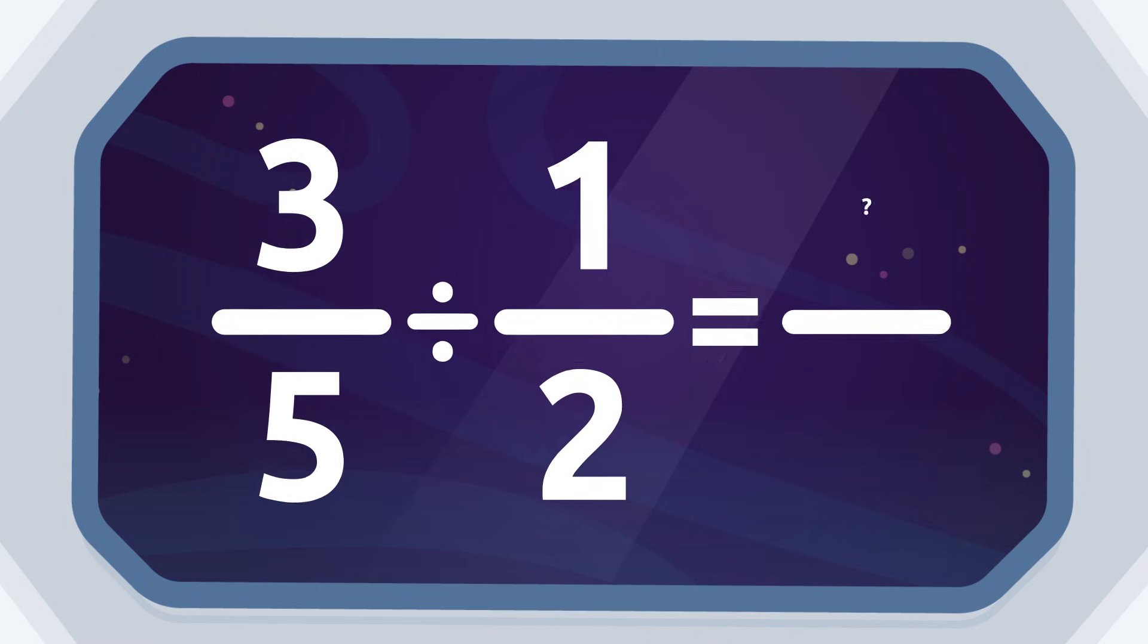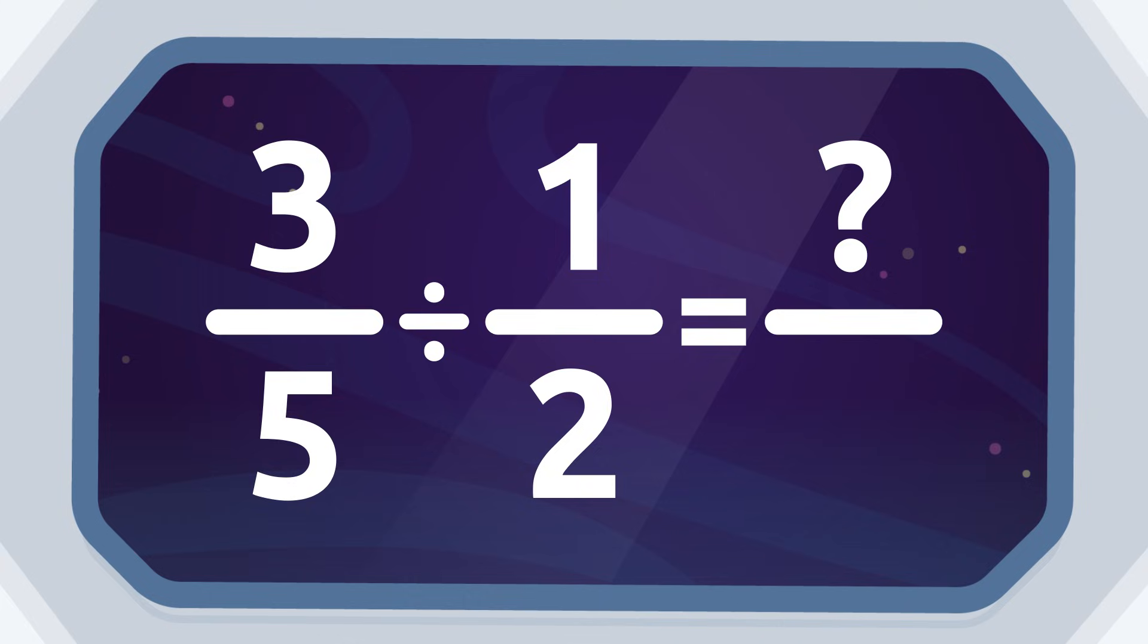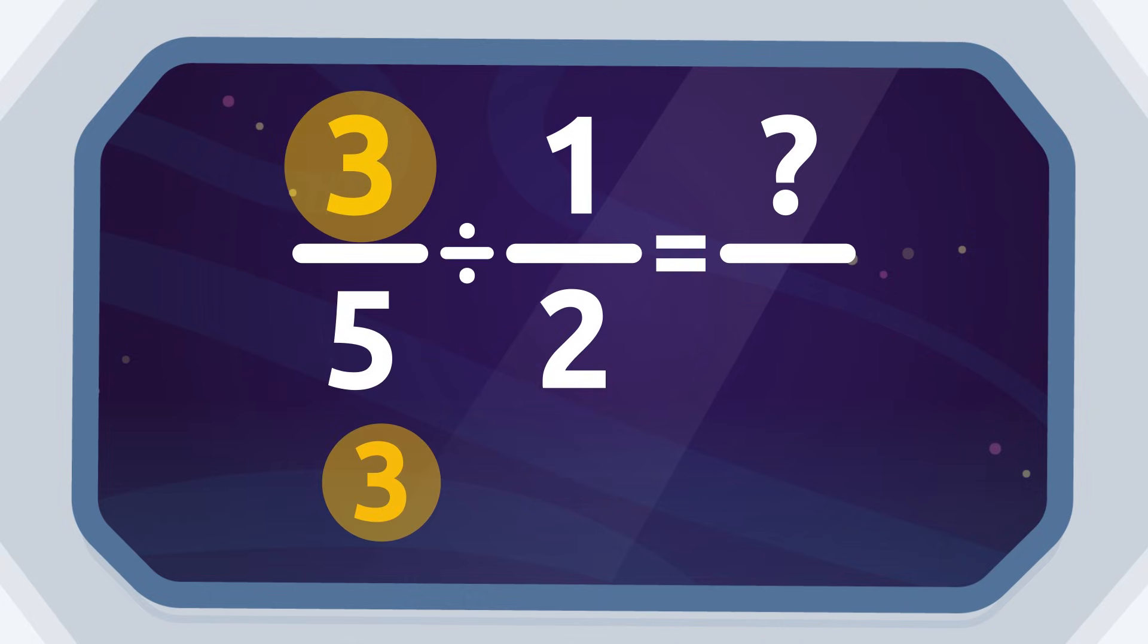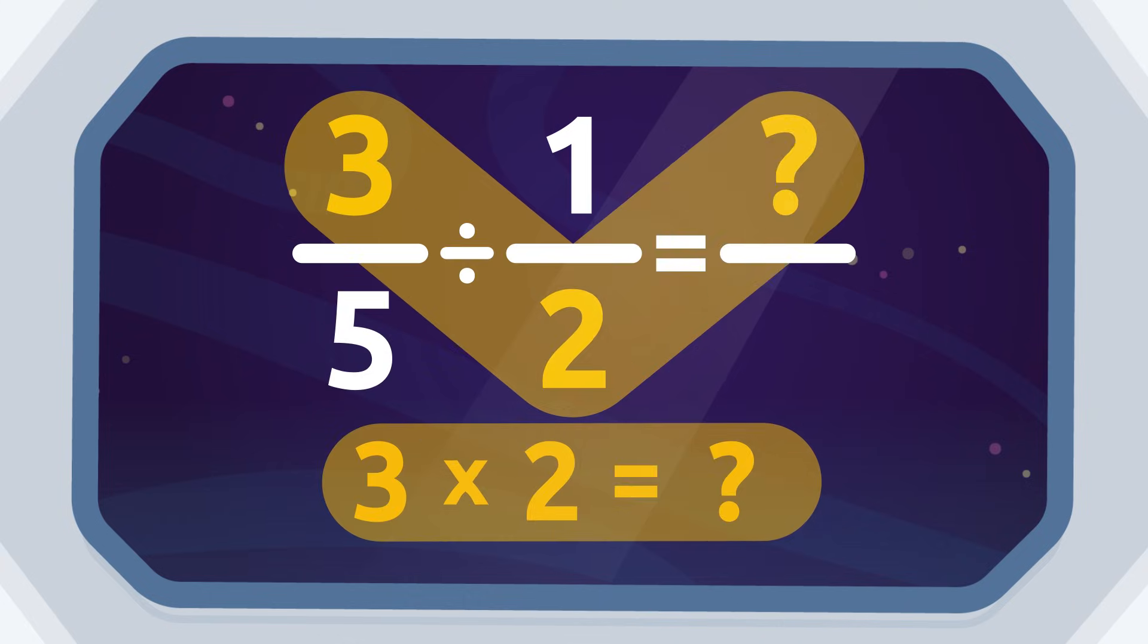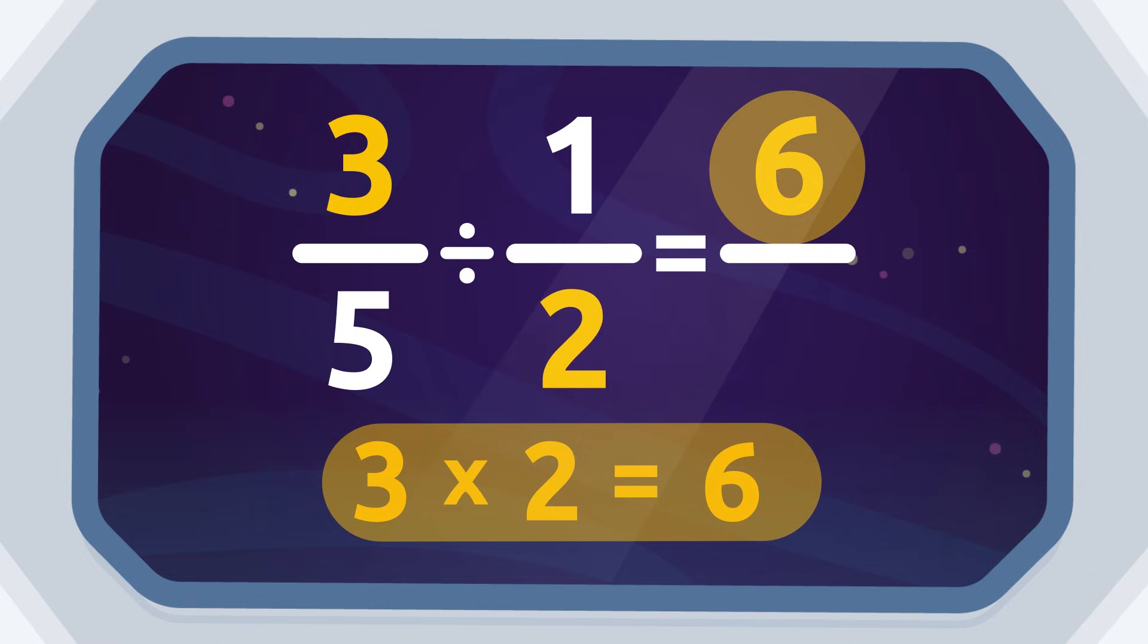To find the numerator of the product, we multiply the numerator of the first fraction by the denominator of the second fraction, meaning three by two, which equals six. The numerator of the product is six.